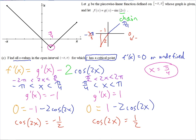So 2x could equal -2π/3. But when you divide by 2, we get x = -π/3. So that's our critical number from this equation. You can get more than one here, it's just one.